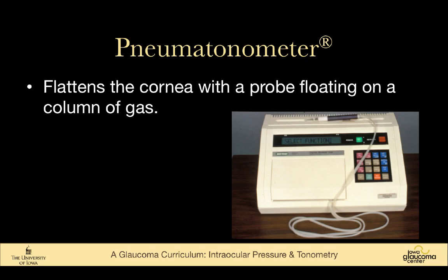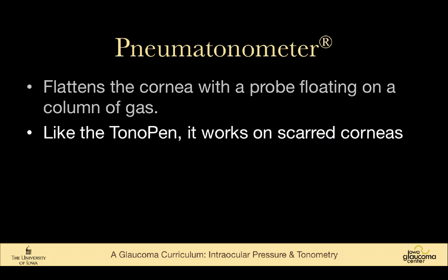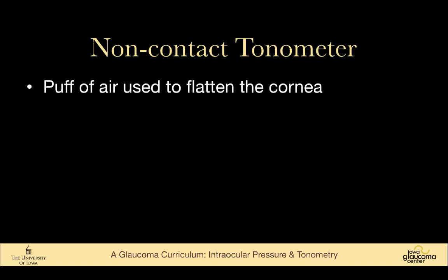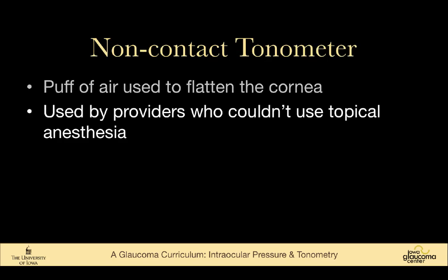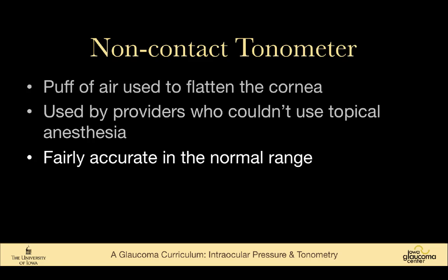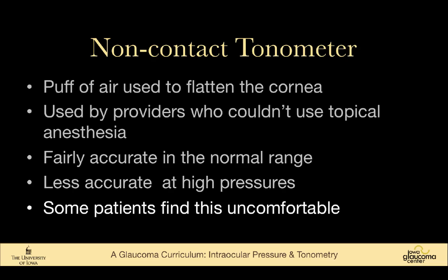The pneumatonometer uses a probe floating on a column of gas to measure intraocular pressure. Like the tono pen, it works well on scarred corneas. Non-contact tonometry uses a puff of air that flattens the cornea. It's used by those who cannot use topical anesthesia. It's fairly accurate in the normal range but less accurate at high pressures, and some patients really dislike that blast of air.